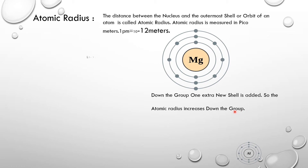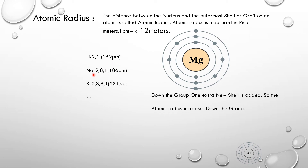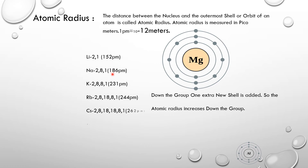Let us consider an example using first A group elements. Lithium has the electronic configuration 2, 1 — two shells — and its atomic radius is 152 picometers. Sodium has the configuration 2, 8, 1 — three shells (K, L, M). So from lithium to sodium, one extra shell is added, and the atomic radius increased from 152 to 186 picometers.